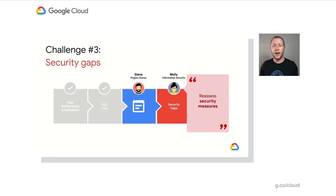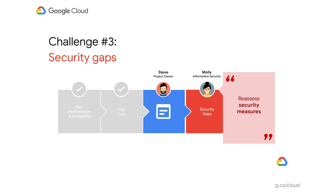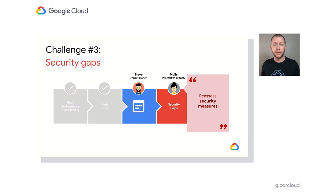Having optimized their cloud infrastructure for cost and performance, Steve turns to security. His organization never took security lightly, and Steve feels they have a good set of in-depth security measures in place. But given their recent growth, as well as their company's new work-from-home configuration, he meets up with Molly, who is in charge of their security team. Together, they sit down to reassess their security measures and make sure they are doing everything they can to protect the sensitive information that their customers are trusting them with.